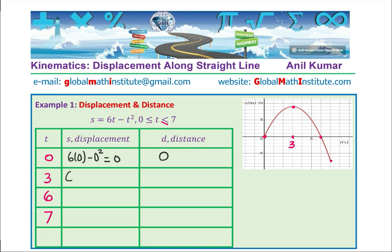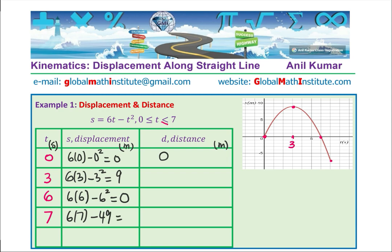At t equals 6, s equals 6 times 6 minus 6 squared, which is 36 minus 36 equals 0. At t equals 7, s equals 6 times 7 minus 7 squared, which is 42 minus 49 equals minus 7. So displacement could be positive, negative, or zero, but distance is always positive — it keeps on adding.